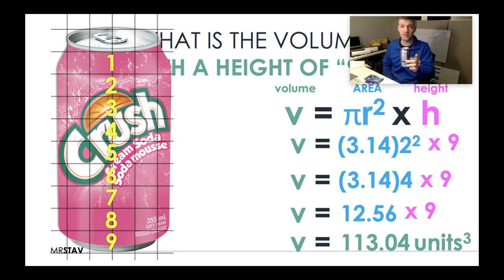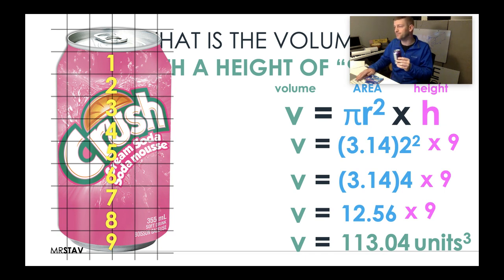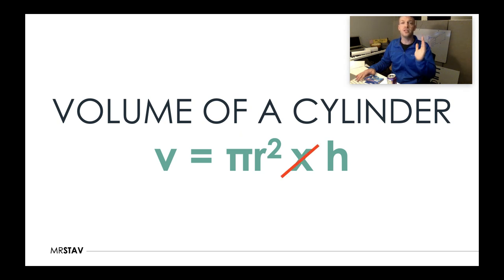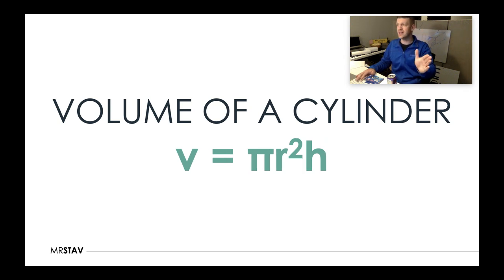I hear you asking: how much is the volume now that Mr. Stav drank some? That's a great test question. But for now we move on. Very important — memorize this. Put it big in your notes: volume equals pi r squared times h. For those who prefer it, get rid of the multiplication sign and just write pi r squared h.